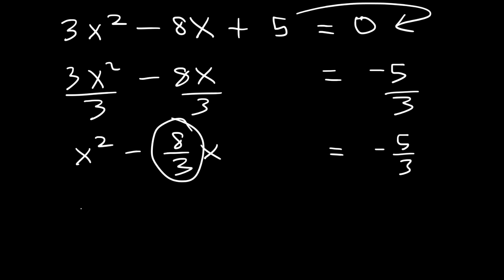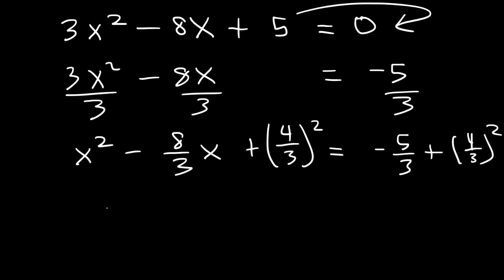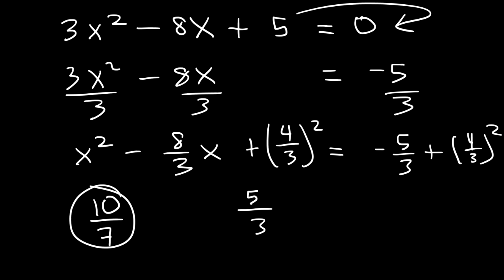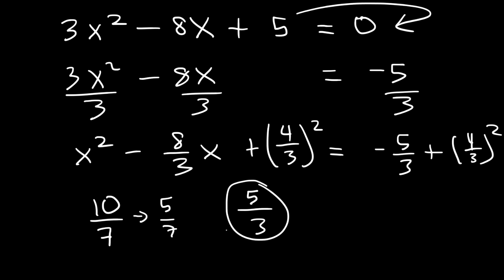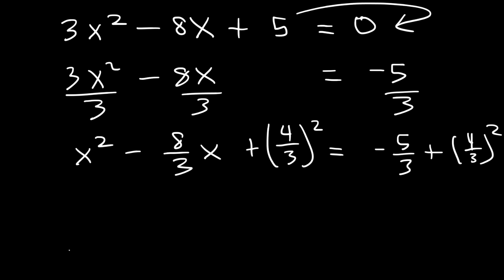Now let's complete the square. What is half of 8 over 3? Half of 8 is 4, so we're going to add 4 over 3 squared to both sides. Never forget to square it after you divide by 2. By the way, when you have a fraction, there are two ways to divide it by 2: if you have 10 over 7, you can divide the numerator by 2 to get 5 over 7. If the numerator is odd, like 5 over 3, multiply the denominator by 2 to get 5 over 6. Both ways work the same.